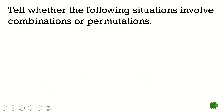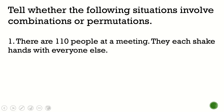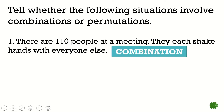Can you tell me whether a specific situation is combination or permutation? Let's have this one: there are 100 people at a meeting and they each shake hands with everyone else. Is there a specific arrangement if you are shaking hands? The answer is no. So that's combination.